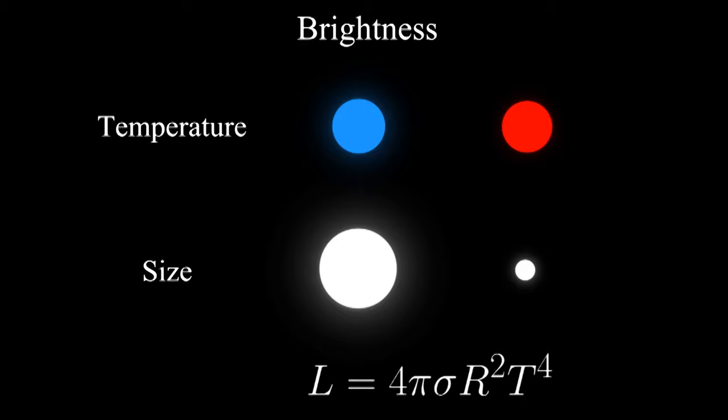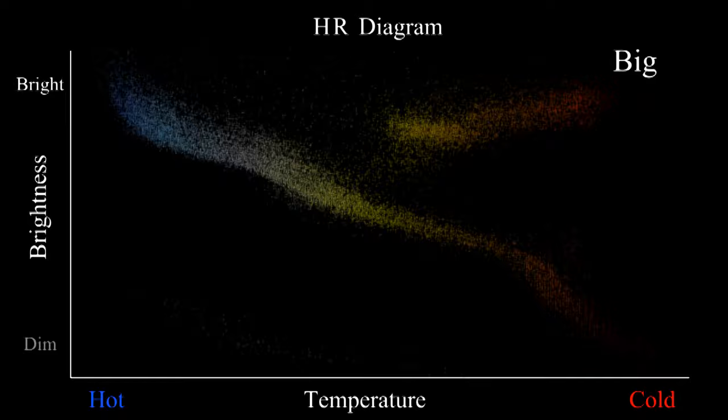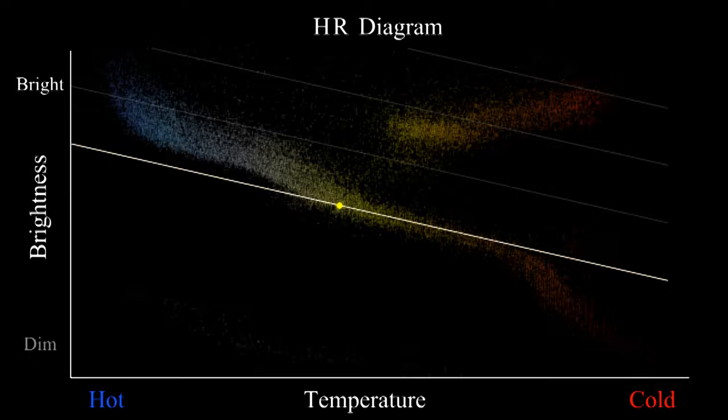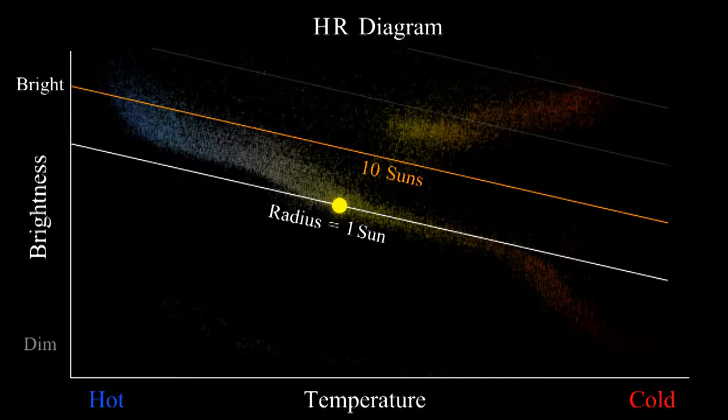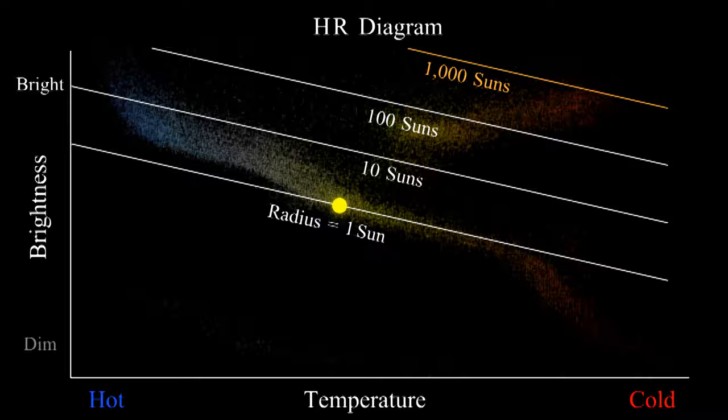The biggest stars are in the upper right corner. These lines represent stars having different sizes. Along this line, the stars all have the same radius as the sun. Along this line, they're 10 times bigger. On this line, they're 100 times bigger, and then 1,000 times bigger. As you go up and to the right, the stars get bigger.